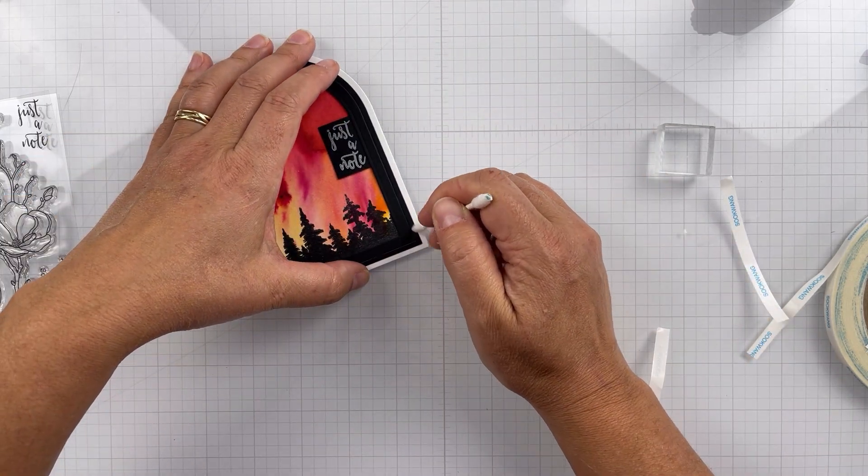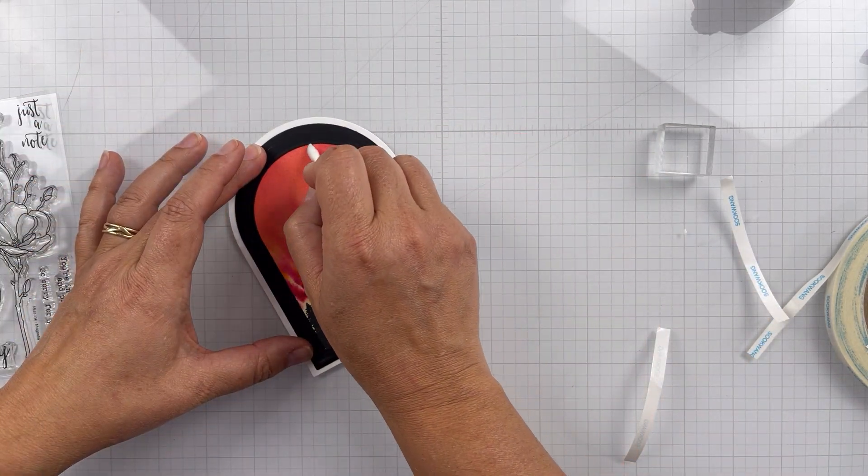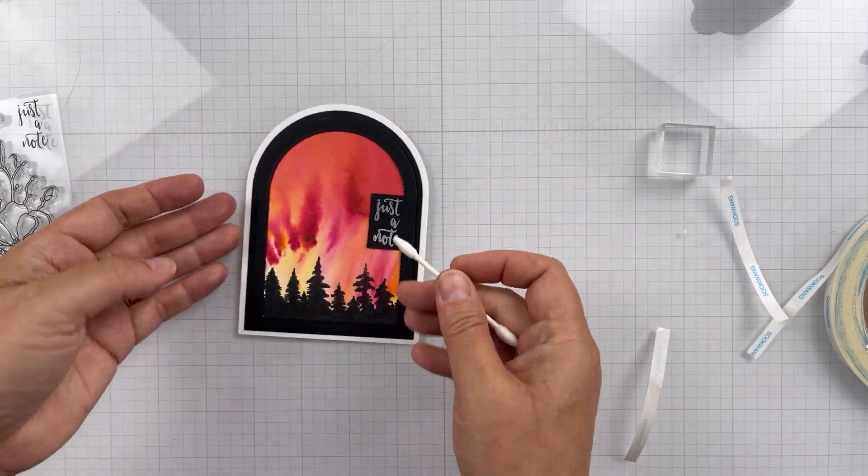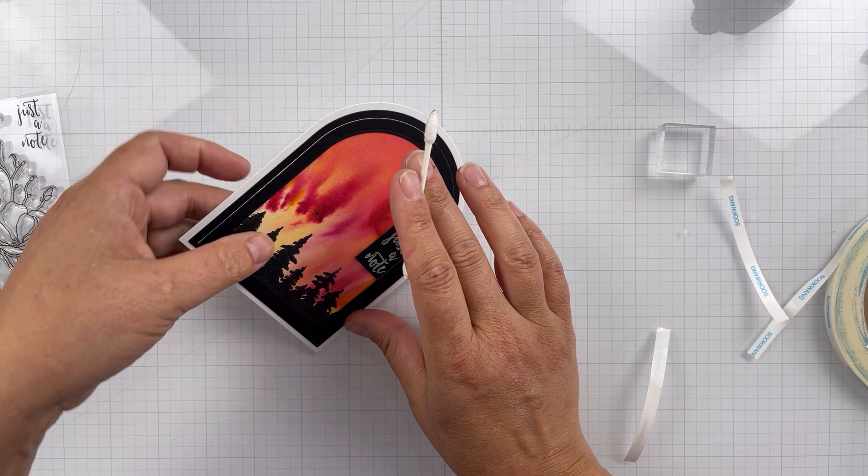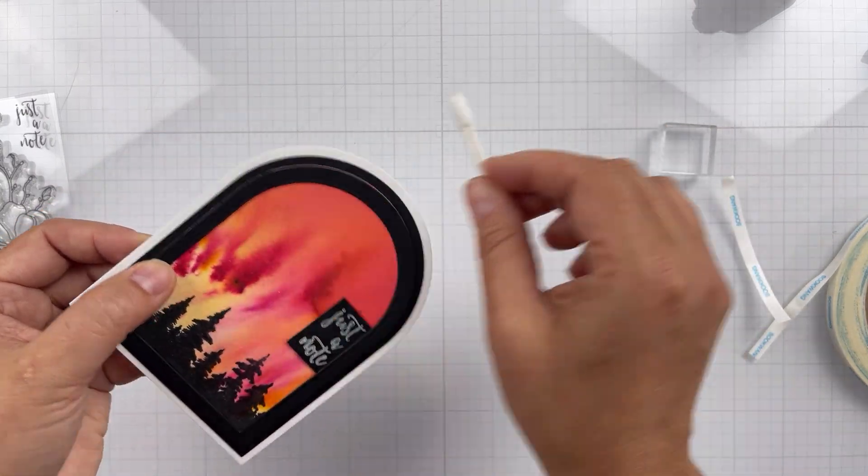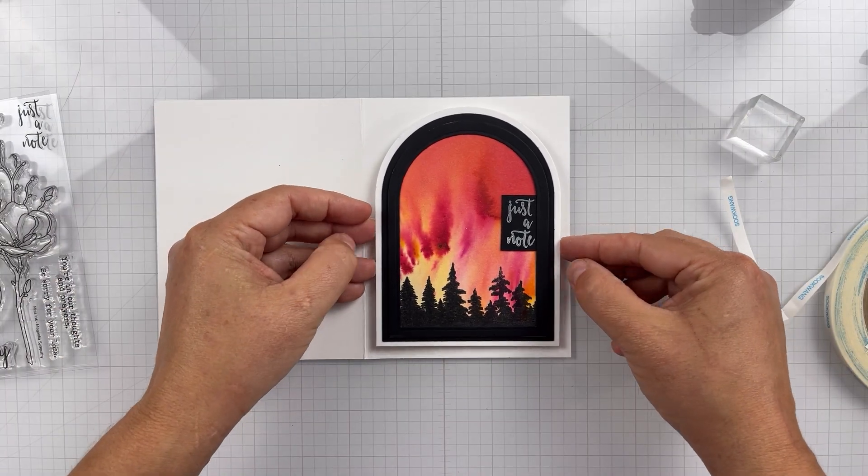And these are just little manicure Q-tips, precision tips. I'll show you here in a second. To clean up the liquid glue, I didn't want to mess around with any tape on the frame there. So the liquid glue worked out perfectly.